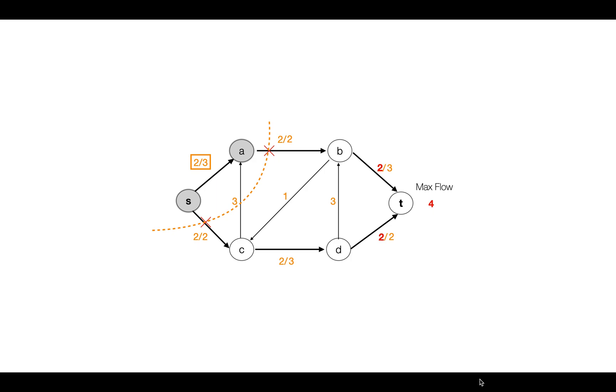Now if you calculate the work done for this minimum cut, it will be the capacities of these edges which will be 2 plus 2, which equals 4—the maximum flow through this network. And that's what the max flow min cut theorem is all about.